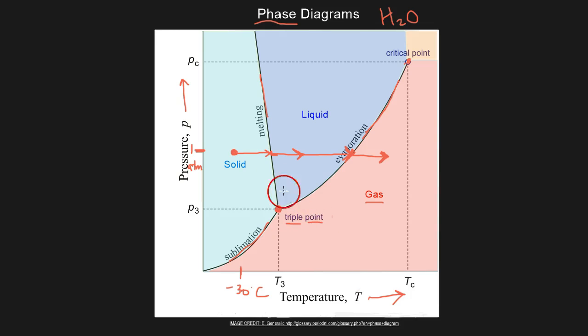And down here we have what's called the triple point. The triple point, as you can probably surmise, is the pressure and the temperature at which ice, liquid water, and water vapor can coexist. And there's only one temperature and one pressure that this can happen at.